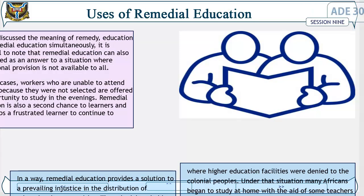Having discussed the meaning of remedial education, it is essential to note that remedial education can also be defined as an answer to a situation where educational provision is not available to all. In such cases, workers who are unable to attend schools because they were not selected are offered an opportunity to study in the evenings. Remedial education is also a second chance to learners and helps a frustrated learner to continue to learn. In a way, remedial education provides a solution to a prevailing injustice in the distribution of educational opportunities. The colonial period is perhaps a good example of identifying a society where higher education facilities were denied to colonial peoples.